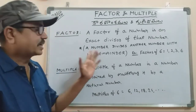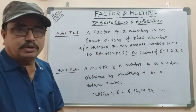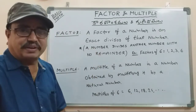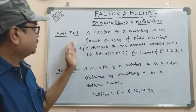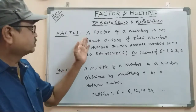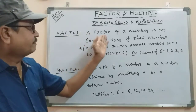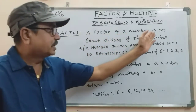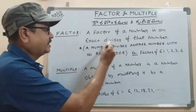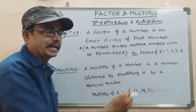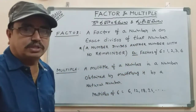So the difference between factor and multiple: a factor of a number is an exact divisor of that number, meaning it divides exactly.